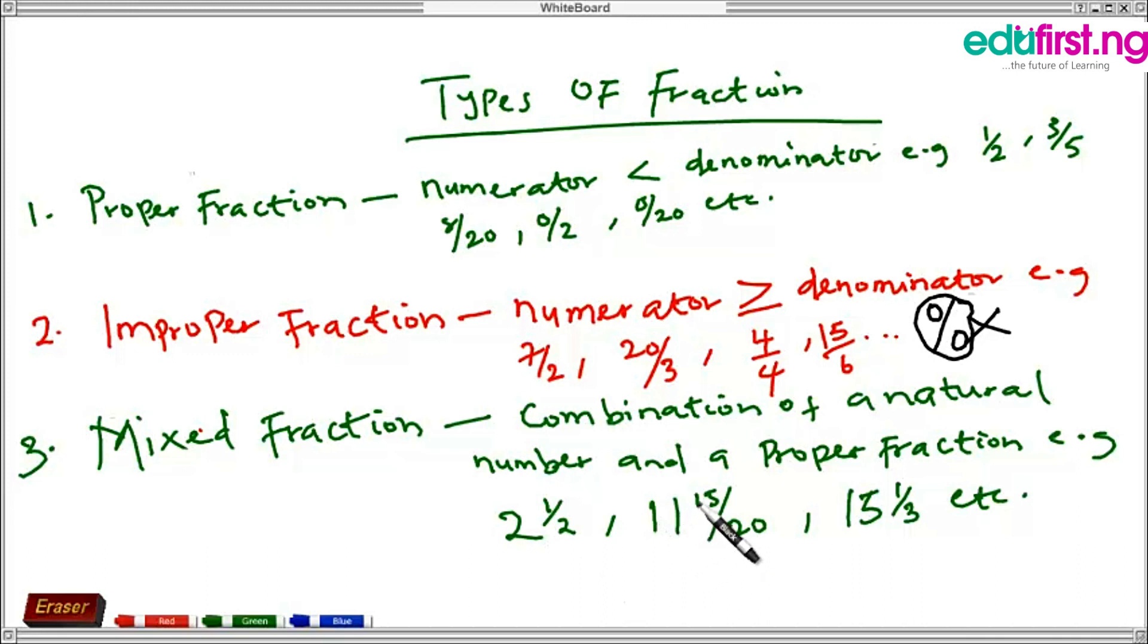The natural number here is 11. Here, 15 whole number 1 over 3 - the natural number here is 15, and the proper fraction is 1 over 3. You can see, this is the proper fraction.